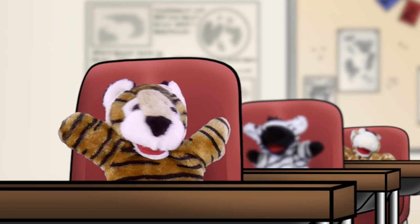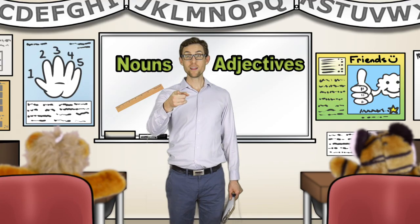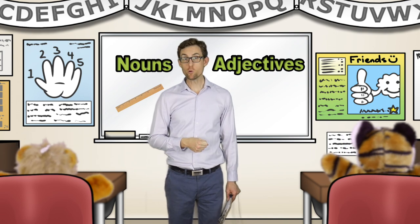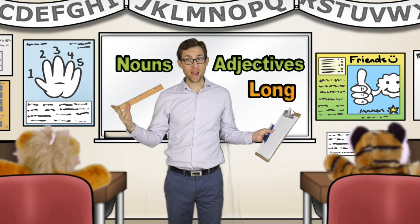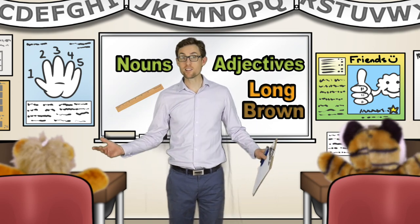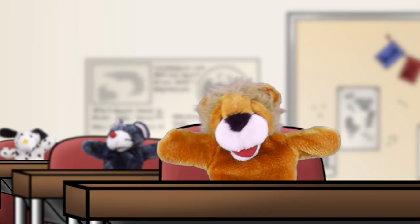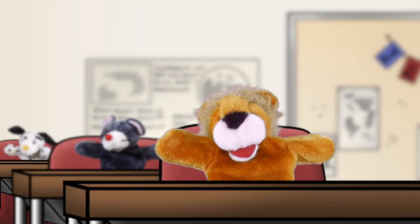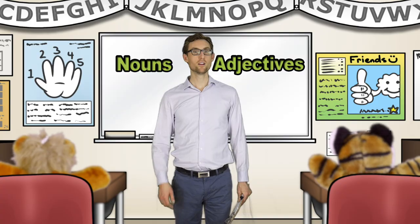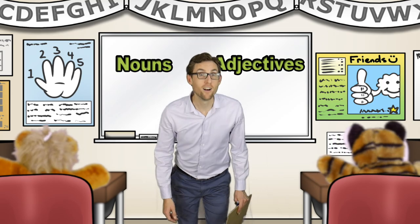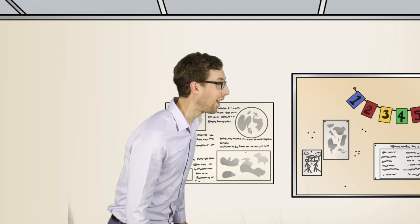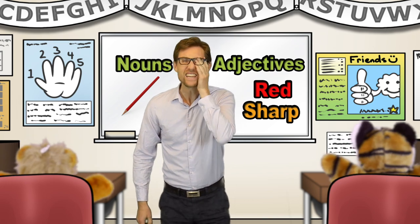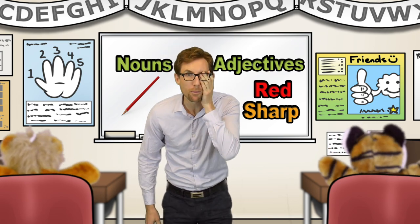What about a ruler? Yes. The ruler is long and brown. The ruler is long and brown. We are finding lots of adjectives. Gordon? Yes. This pencil is red and sharp. Yes, Gordon. It is sharp.